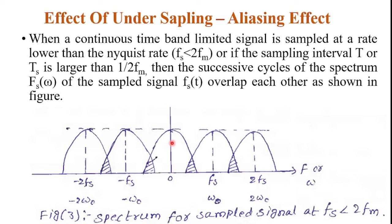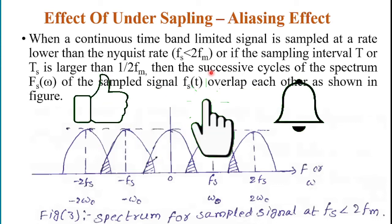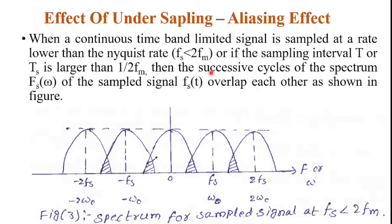What is the effect of under sampling and what is aliasing effect? When a continuous time band limited signal is sampled at a rate lower than Nyquist rate, so FS is less than 2 FM. In previous videos we discussed FS greater than 2 FM and FS exactly equal to 2 FM. Now here we concentrate on under sampling, so that condition is FS is less than 2 FM.